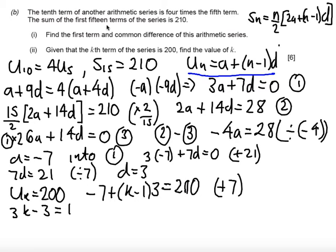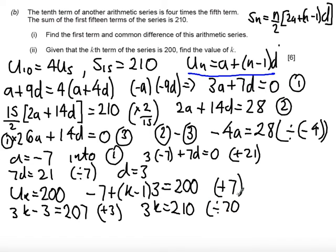And then so if I add 3 to both sides I get 3k equals 210 and if I divide both sides by 3 we get k equals 70.